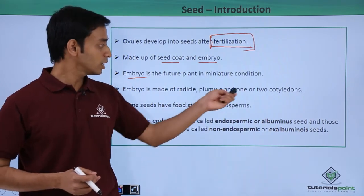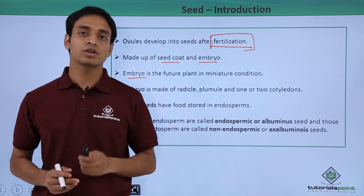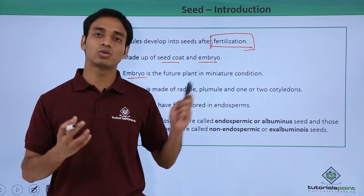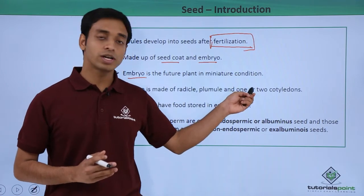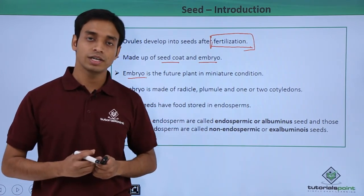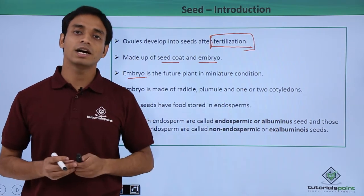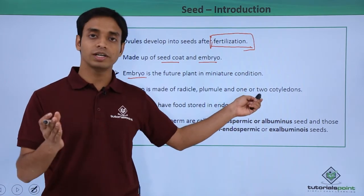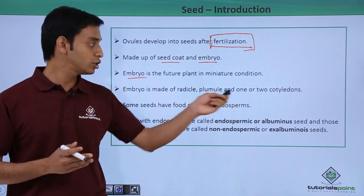Seeds have cotyledons, which can be of two types. First, they can have a single cotyledon structure containing stored reserve food materials — these are known as monocotyledonous seeds. A very good example is coconut. The second type is known as the dicotyledonous seed, with two cotyledons. A very good example is gram.